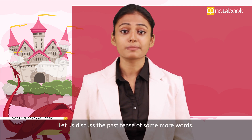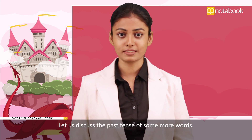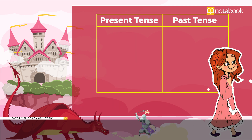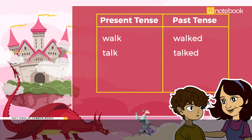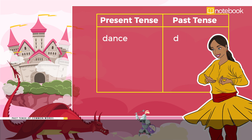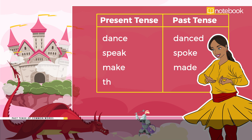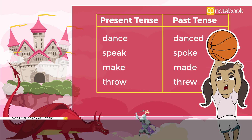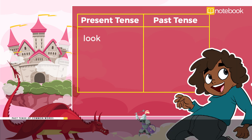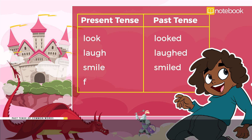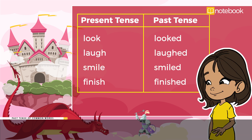Let us discuss the past tense of some more words. Present tense and past tense: walk → walked, talk → talked, go → went, say → said, dance → danced, speak → spoke, make → made, throw → threw, look → looked, laugh → laughed, smile → smiled, finish → finished.